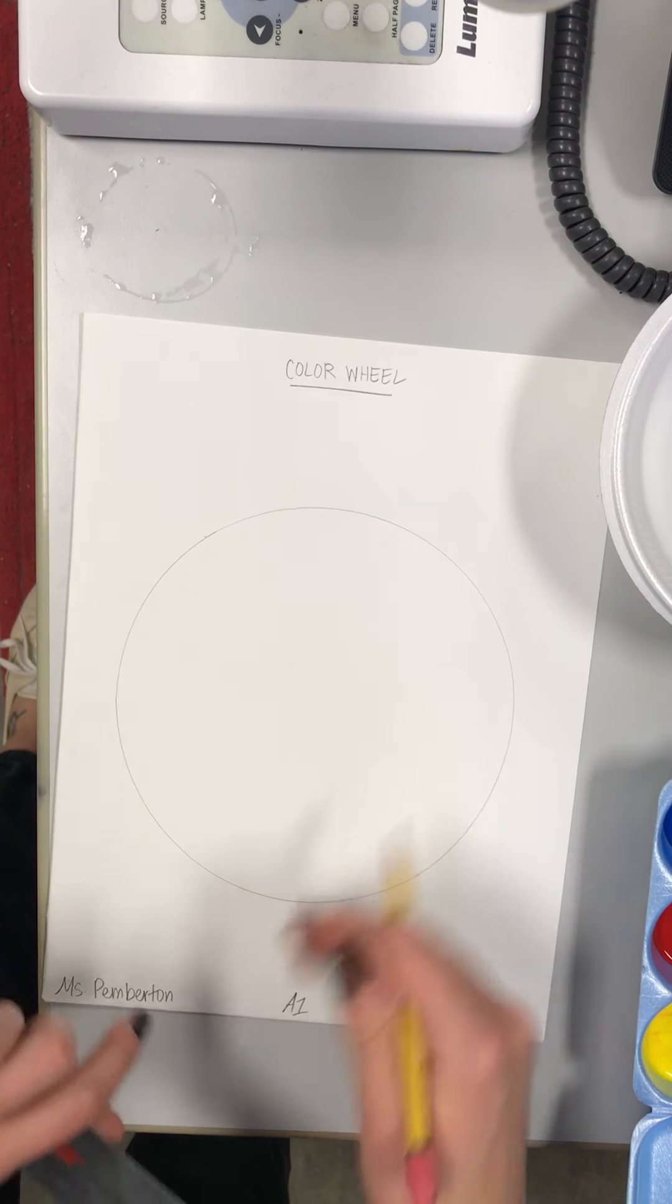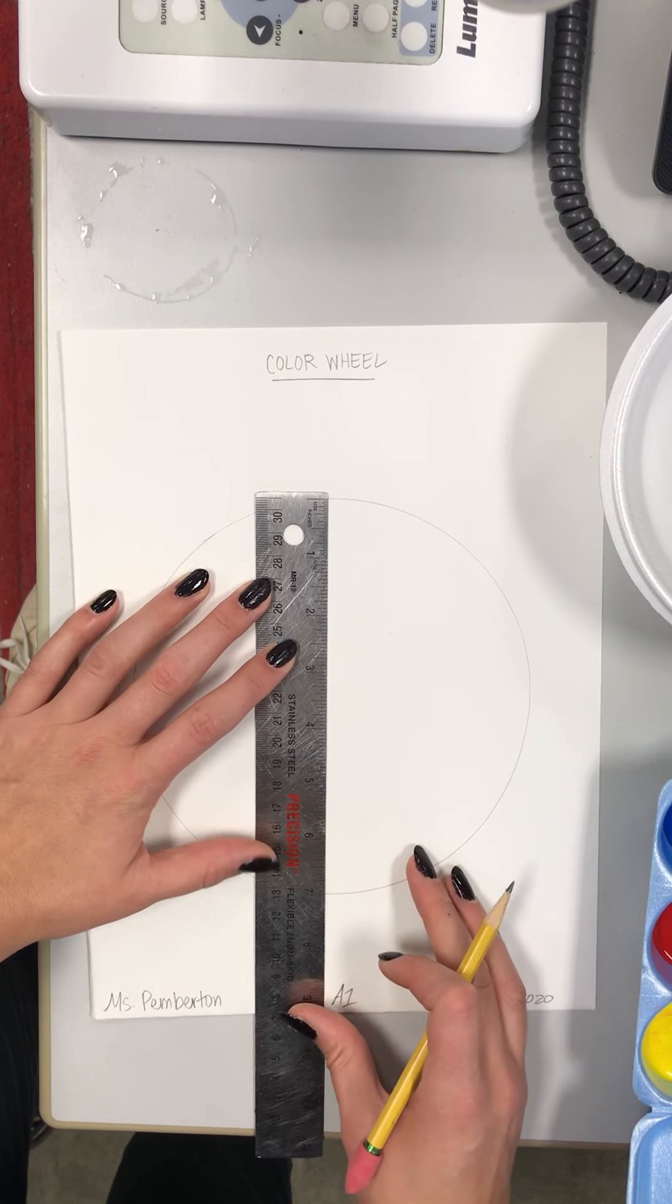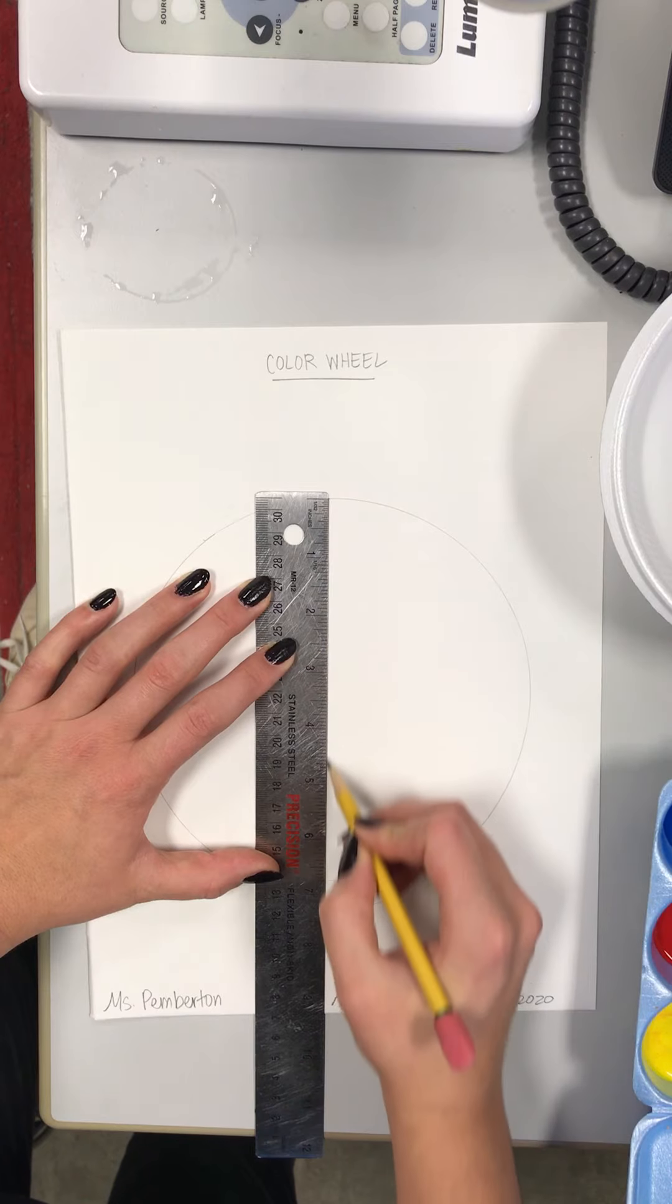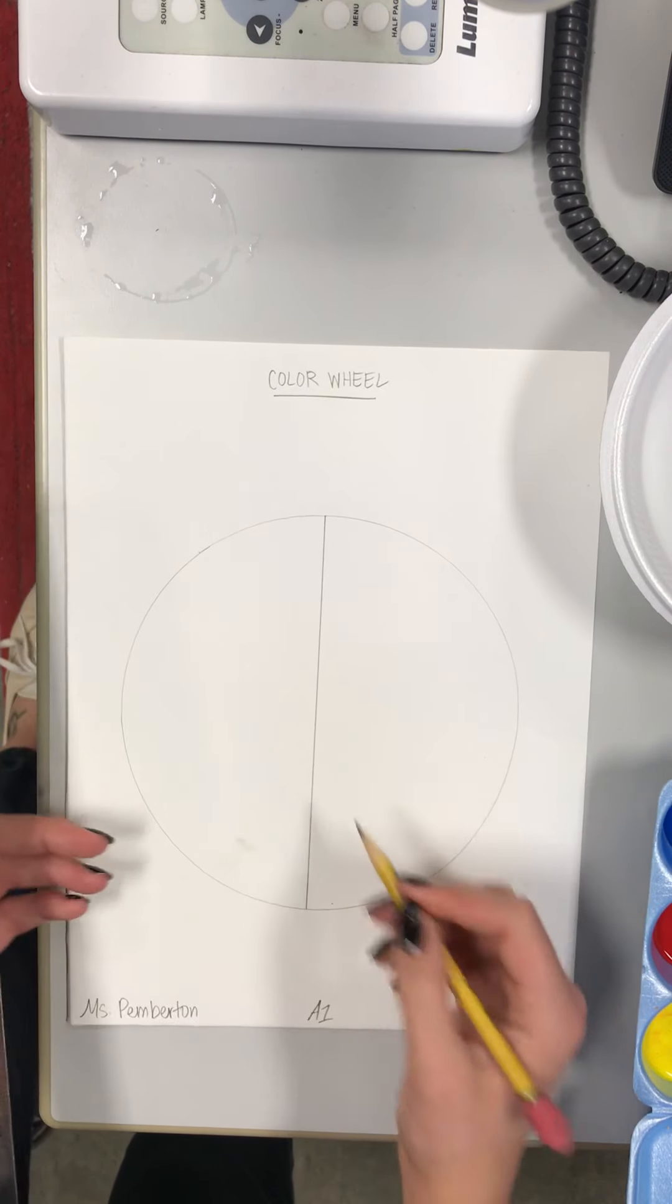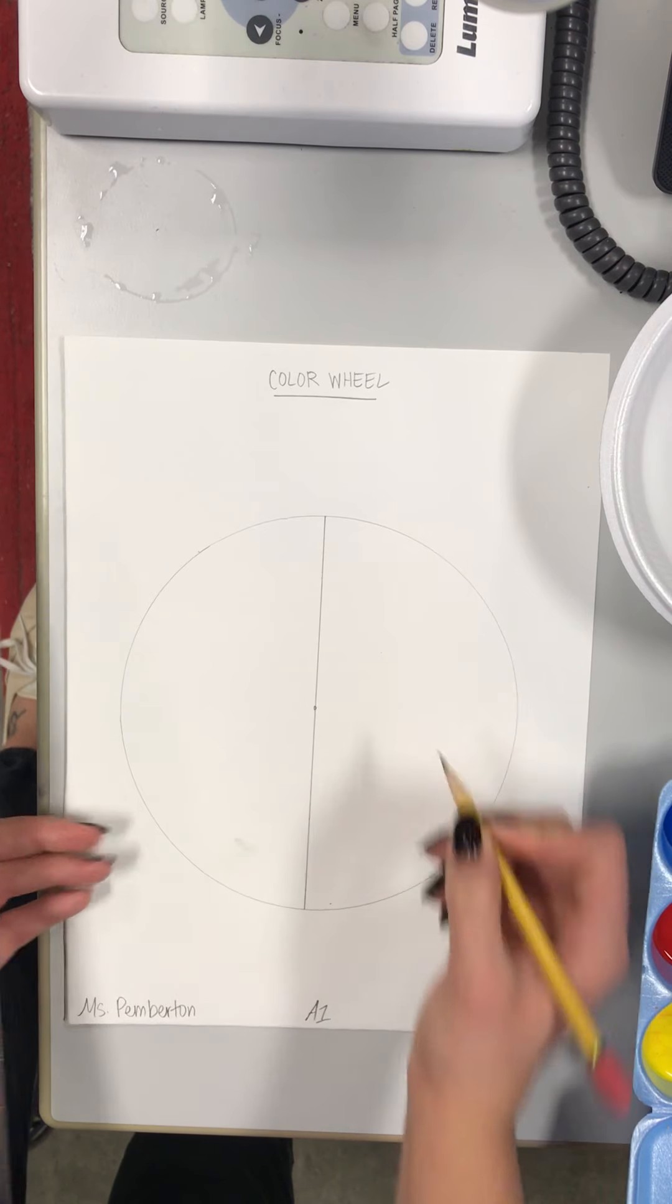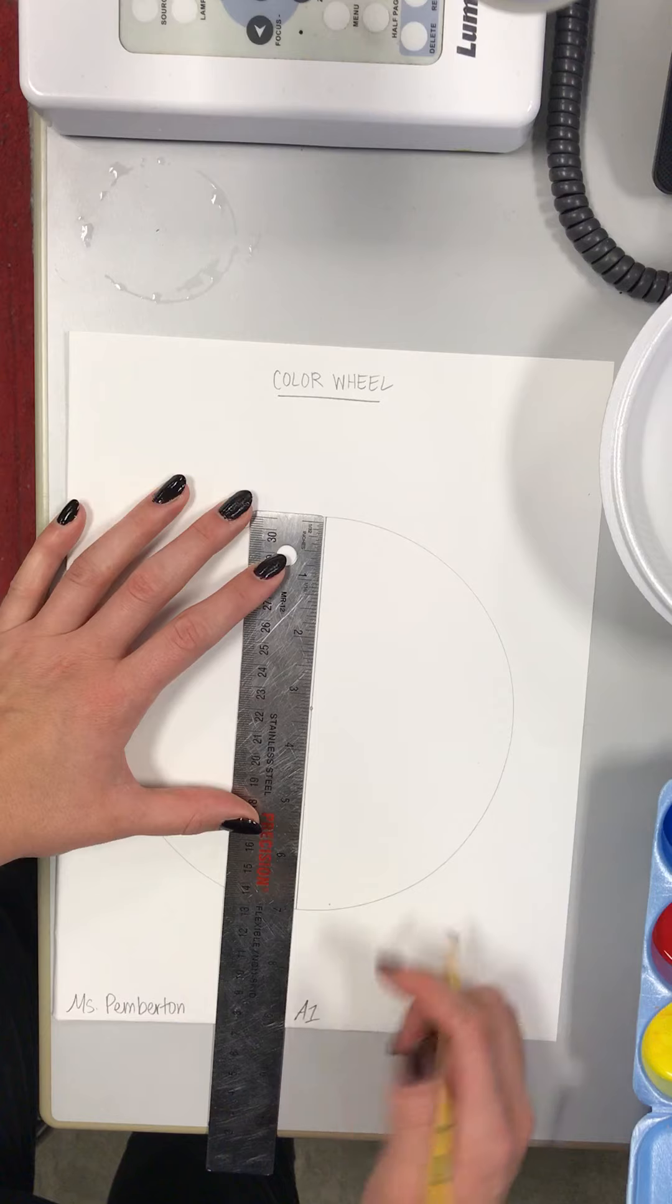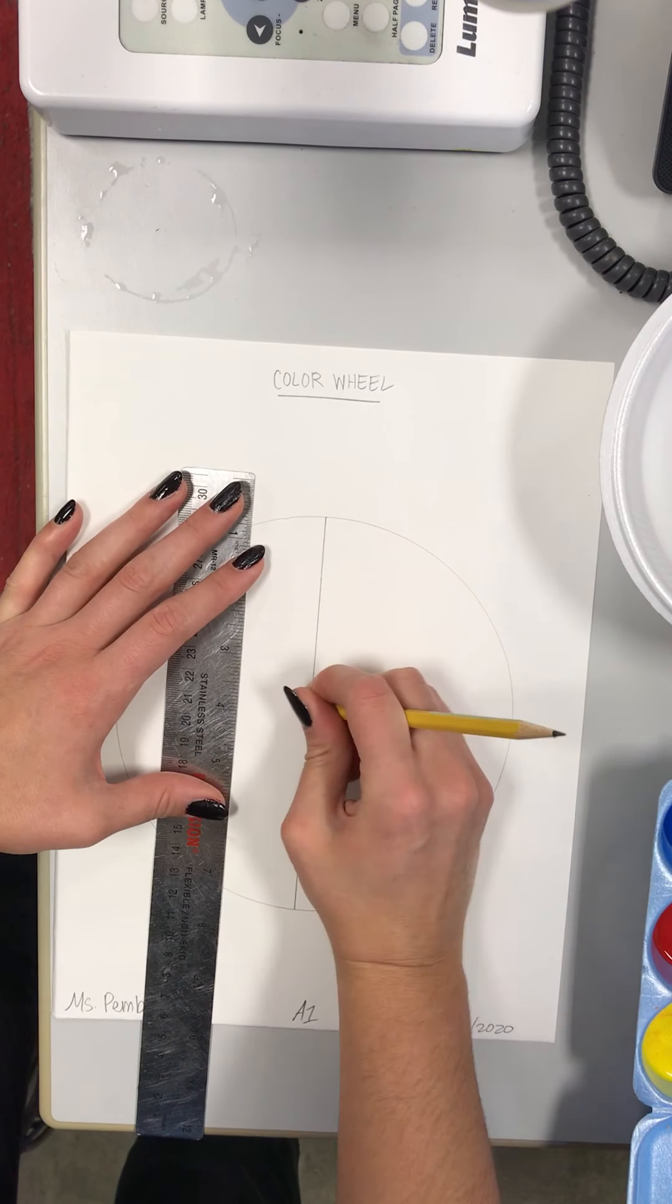I am going to draw a line straight in half to divide up my circle. And then about at the center, so this is about seven inches across. If I want to get the exact center, that's going to be three and a half inches right there.